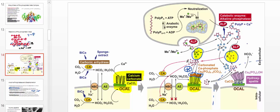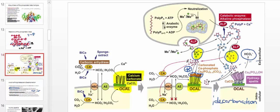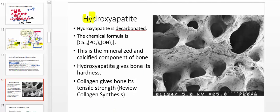The final step is referred to as decarbonation. The only reason the carbonate was there is to facilitate the precipitation of calcium and phosphate. In this final step, the bicarbonate is released from the apatite, leaving behind the calcium and phosphate already deposited. And so the final product we get is hydroxyapatite.